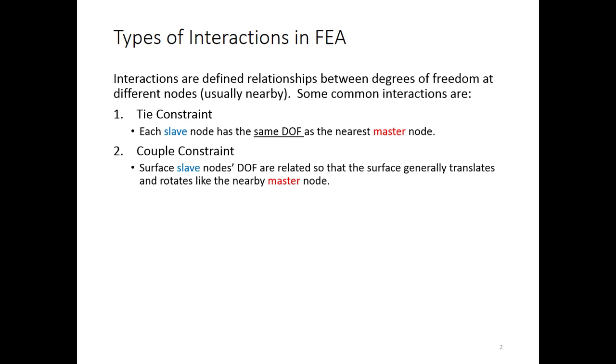A coupling constraint is sort of a looser version of that. You've got slave nodes on some surface that is related to a nearby master node so that you get some general rotation of the surface.